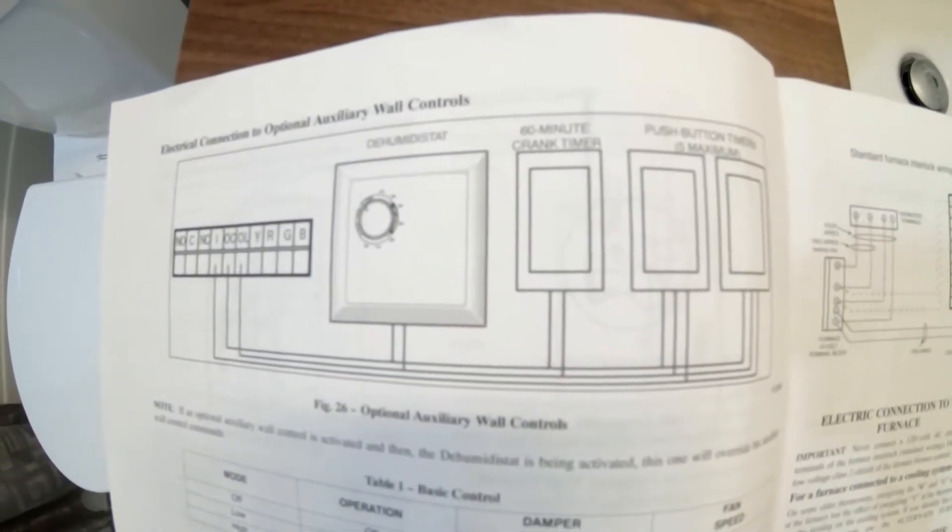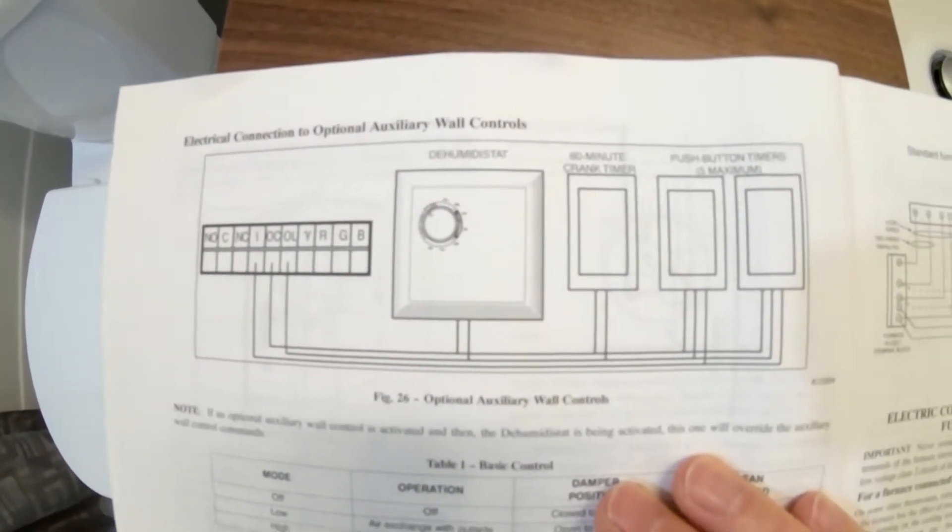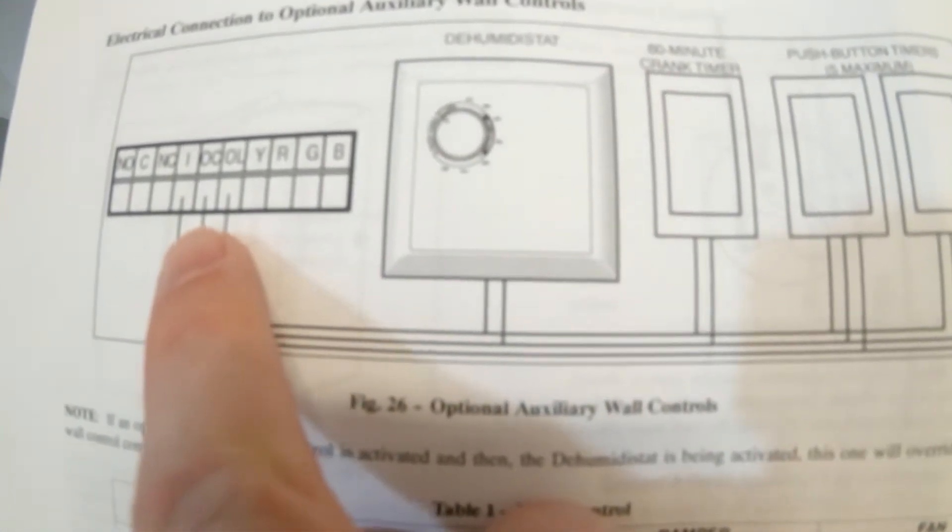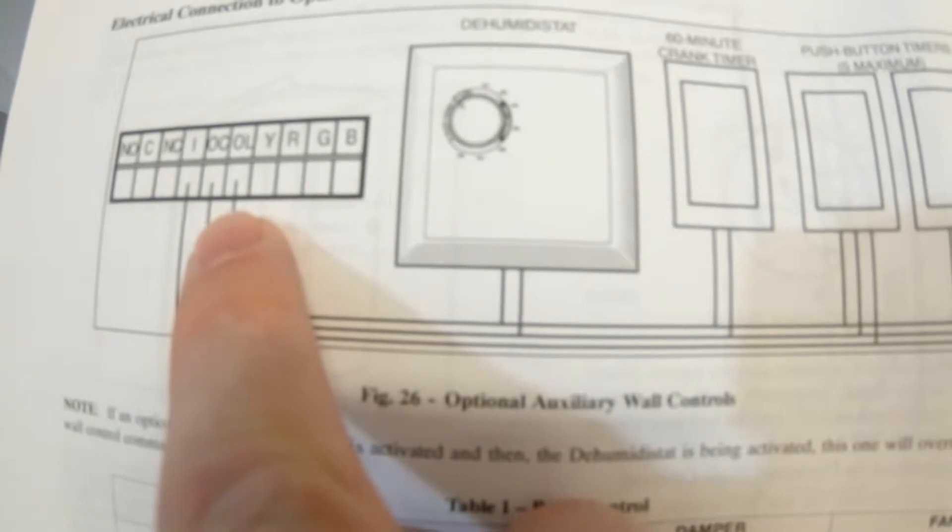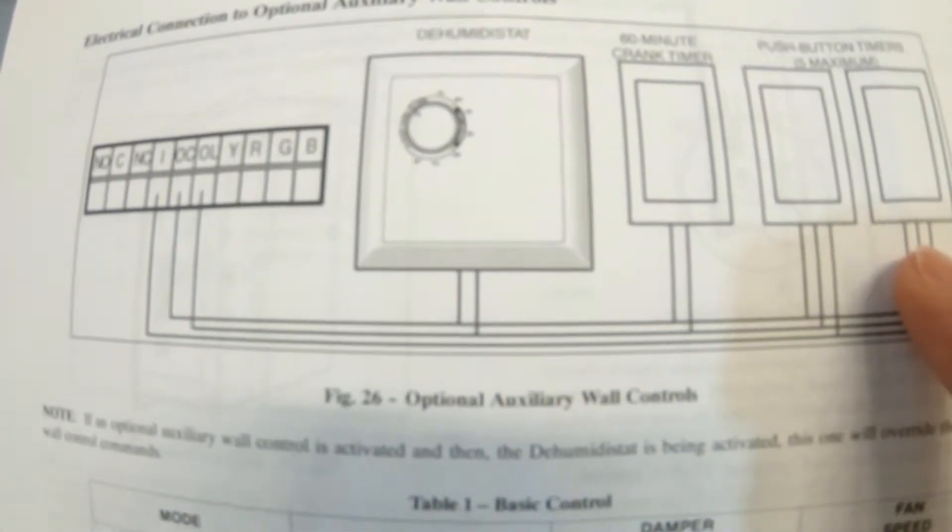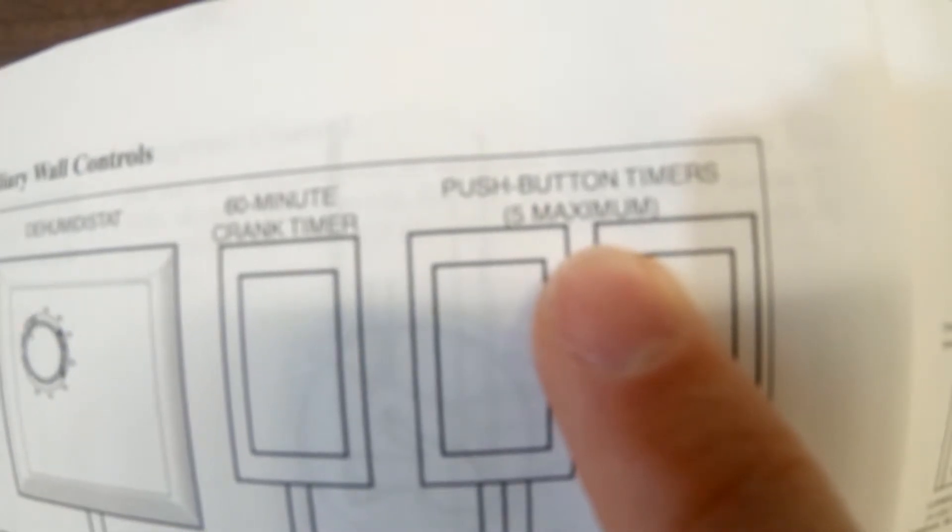Now here in my manual for the HRV, you'll want to refer to yours. It shows you the three wires and shows you where they're connected to on the circuit, and then it has how they're wired up here. So this is of note, for mine, it's a maximum of five timers.